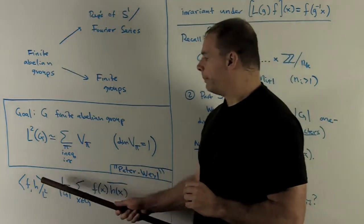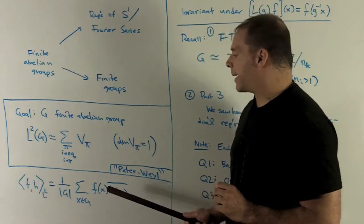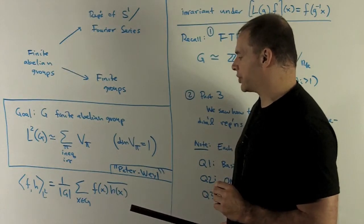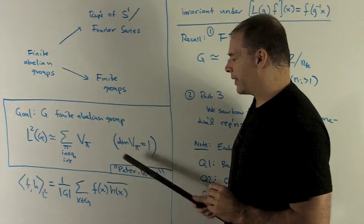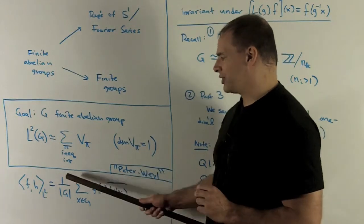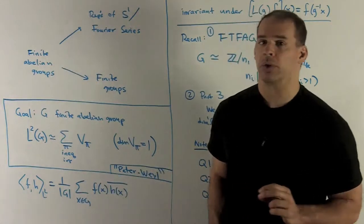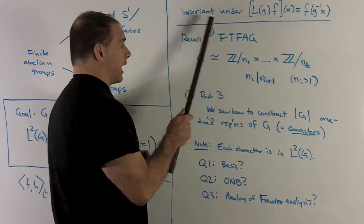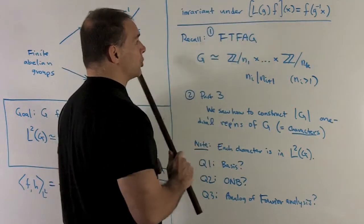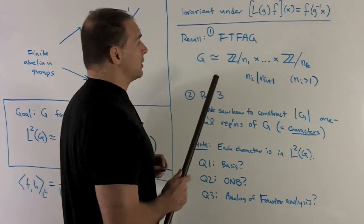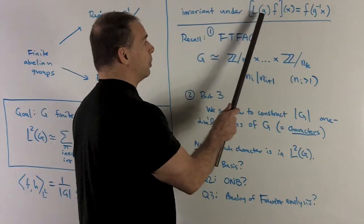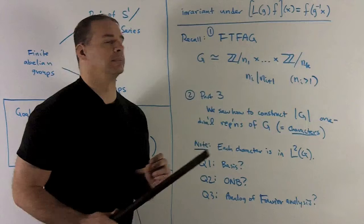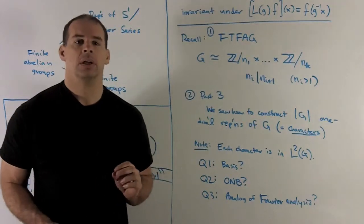We're going to have a norm for functions just given by: take your first function, multiply it by the conjugate of your second function, add that up over all points, and then divide by the order of the group. For that inner product, we're going to have a group action for which our inner product is invariant, given by pushing your group element to the inside of the function by the inverse.